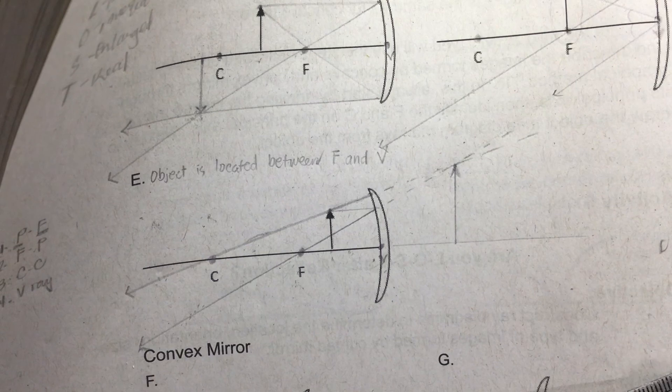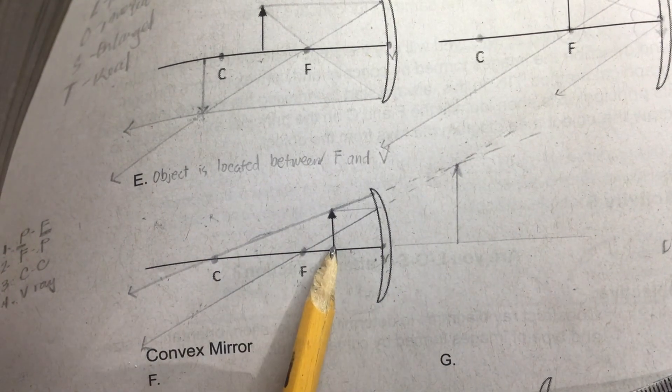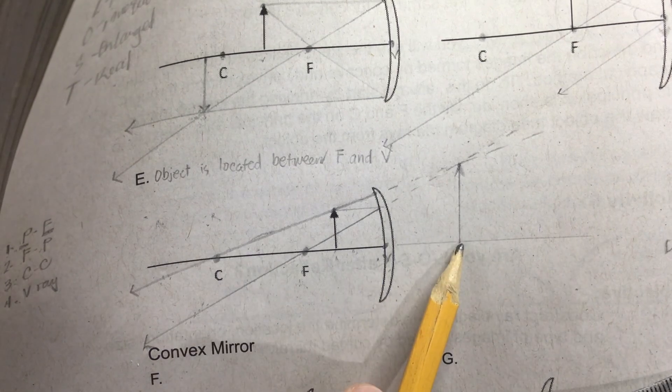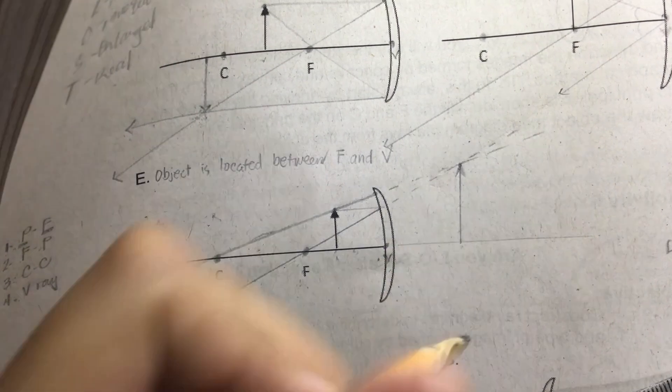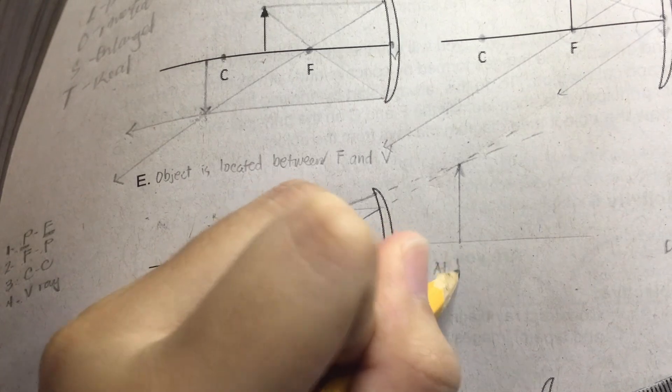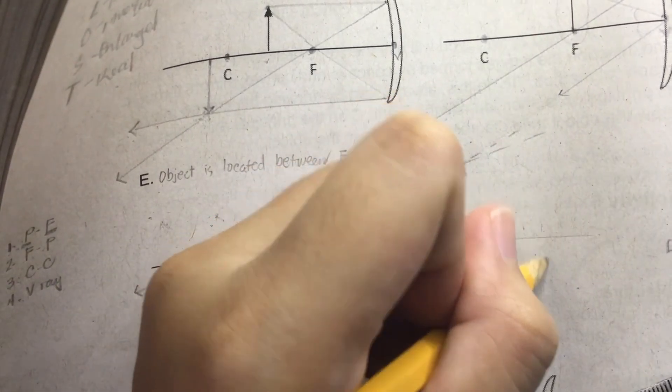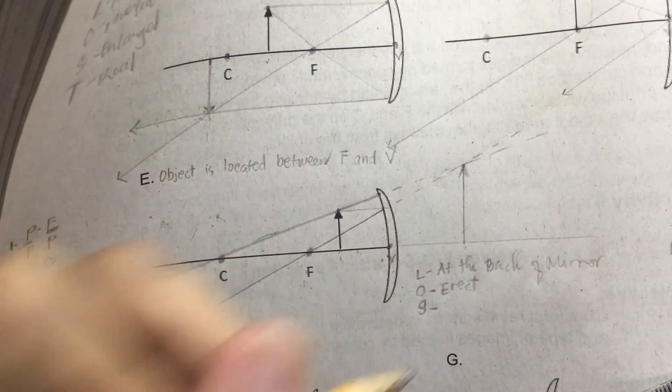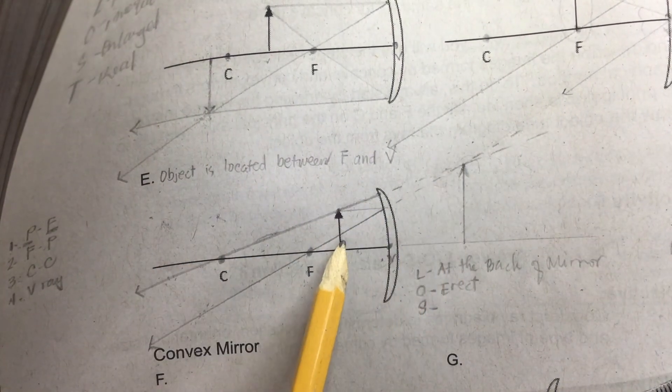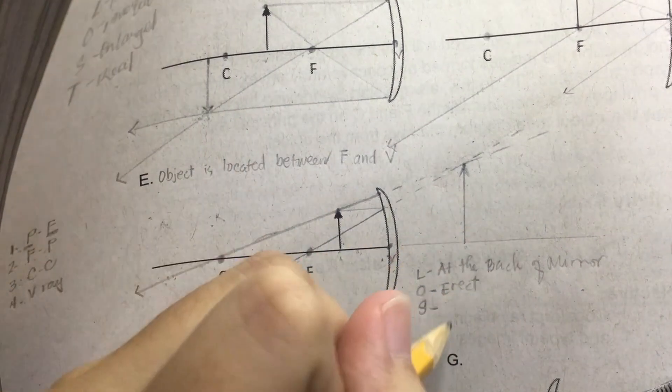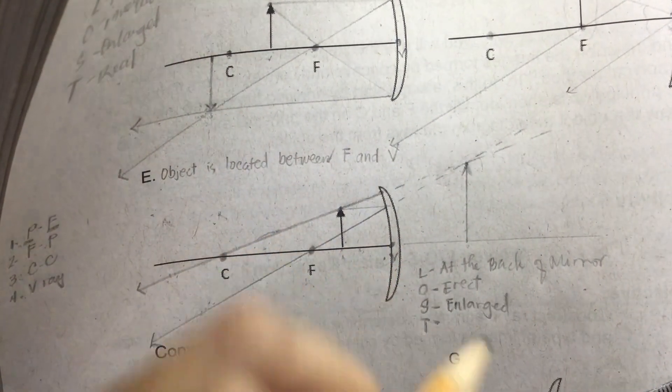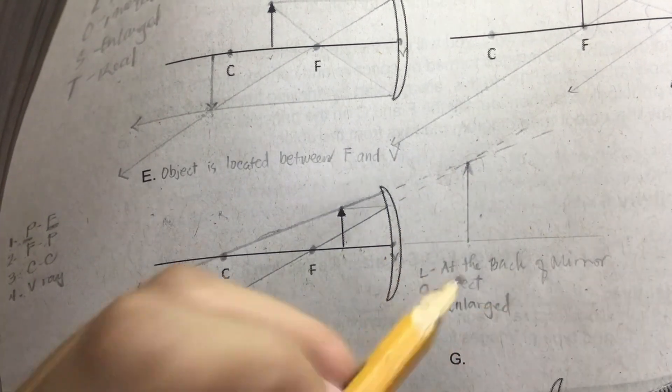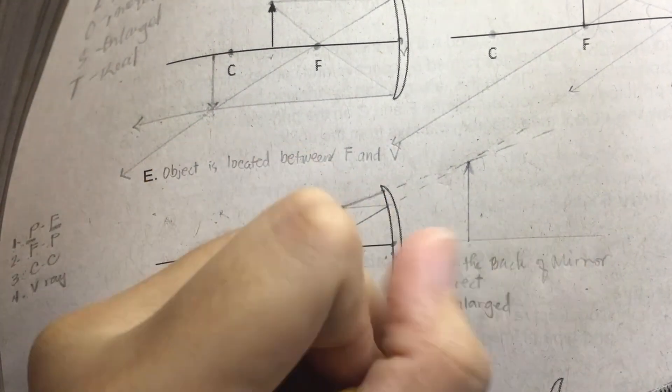So for the fifth diagram, if the object is located between the focal point and the vertex, the image is formed at the back of the mirror. So let's describe the location now, and that is at the back of the mirror or behind the mirror. The orientation is upright or erect. Its image is bigger compared to the object, so it is enlarged. And the type of image formed is, this time the image is formed at the back of the mirror, that's why we call it a virtual image.